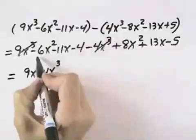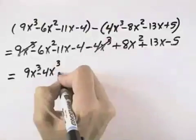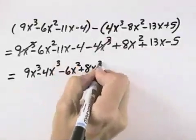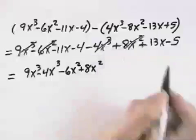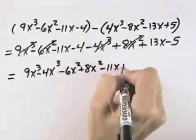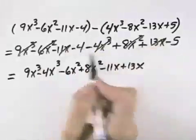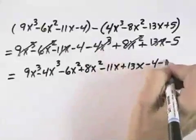And then we have a negative 6x squared and a positive 8x squared, so minus 6x squared plus 8x squared to group those like terms together. Our x terms are minus 11x and plus 13x. And finally, our constant terms are minus 4 and minus 5.